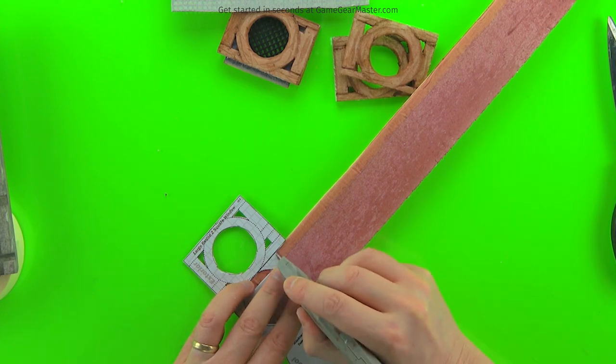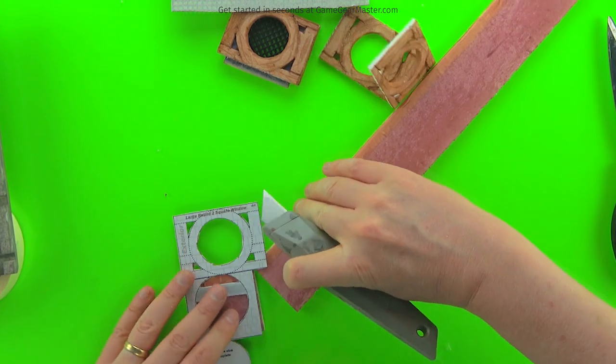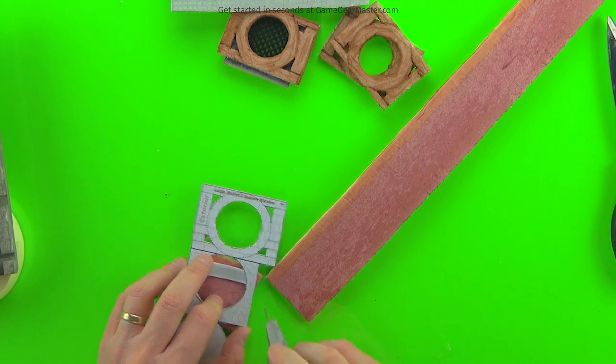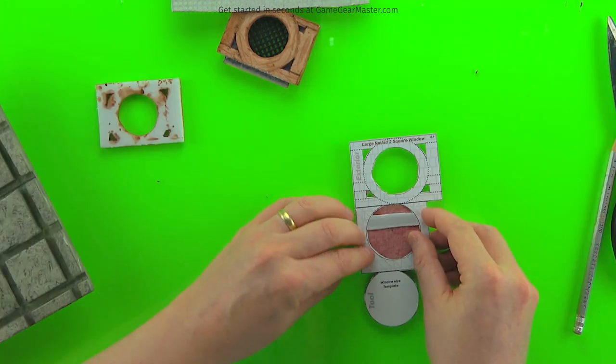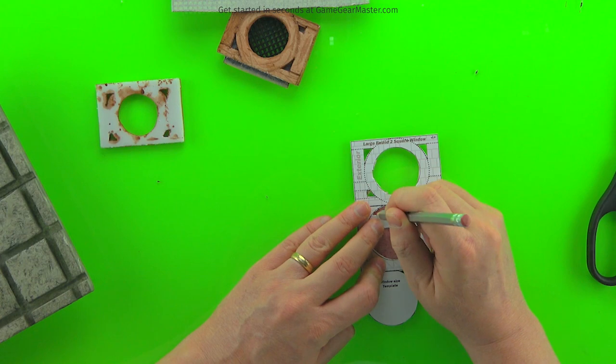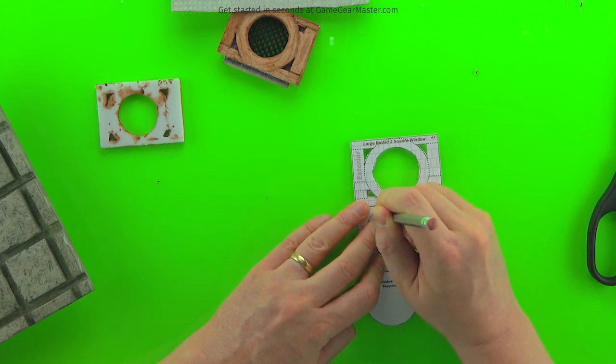The circular window is pretty much the same, except for on that interior wall piece I like to trace out that circle and then cut it. It's a lot easier than trying to hold it cutting a circle out of a template with your knife.